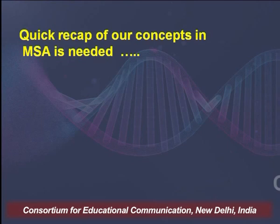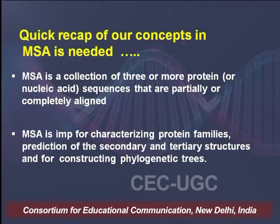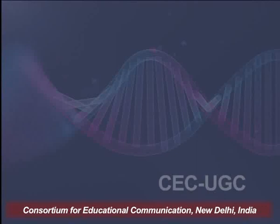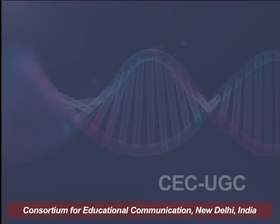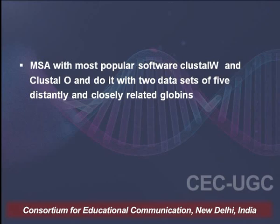We learnt that multiple sequence alignment is where we align three or more sequences of proteins or nucleic acids. Then we try to characterize the protein families based on their similarities, predict secondary structure and tertiary structures, and this is very useful in constructing phylogenetic trees. We have several popular softwares which we talked about, like Clustal Omega and Clustal W, and we learnt how they work with closely related and distantly related globin sequences.